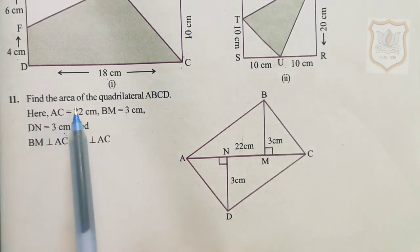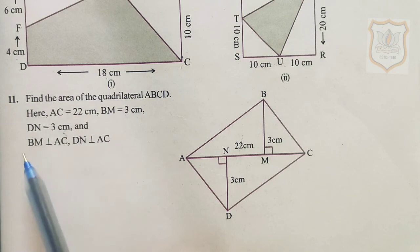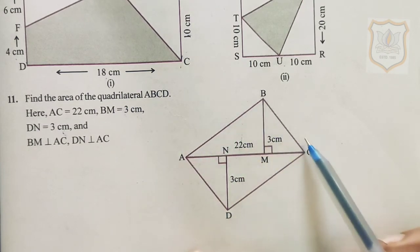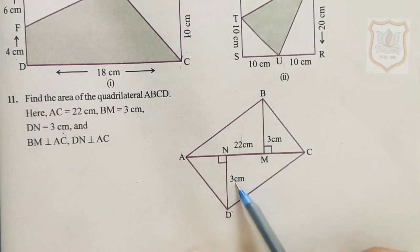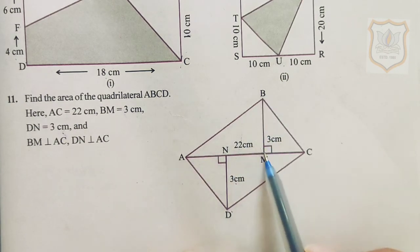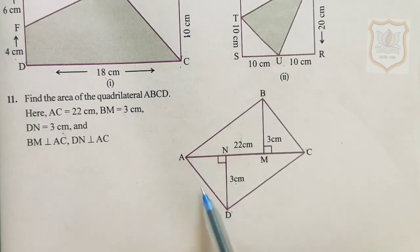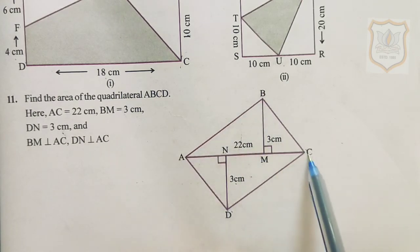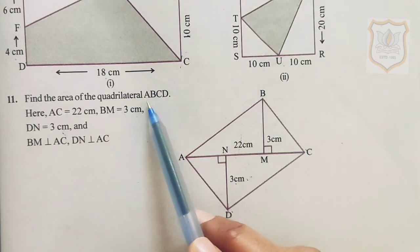Now the last question of exercise 11.4, question number 11: Find the area of the quadrilateral ABCD, where AC equals 22 cm, BM equals 3 cm, DN equals 3 cm, BM is perpendicular to AC, and DN is perpendicular to AC. To find the area of the quadrilateral, we divide it into two triangles: triangle ABC and triangle ADC. We will find the area of both triangles and add them to get the area of quadrilateral ABCD.